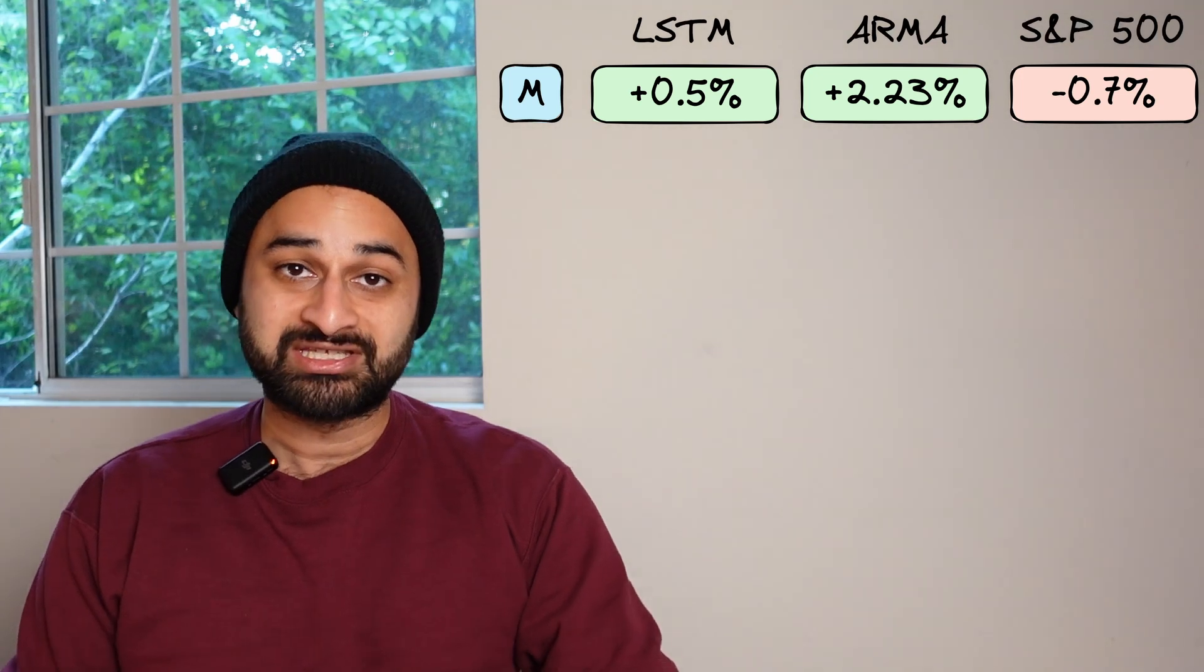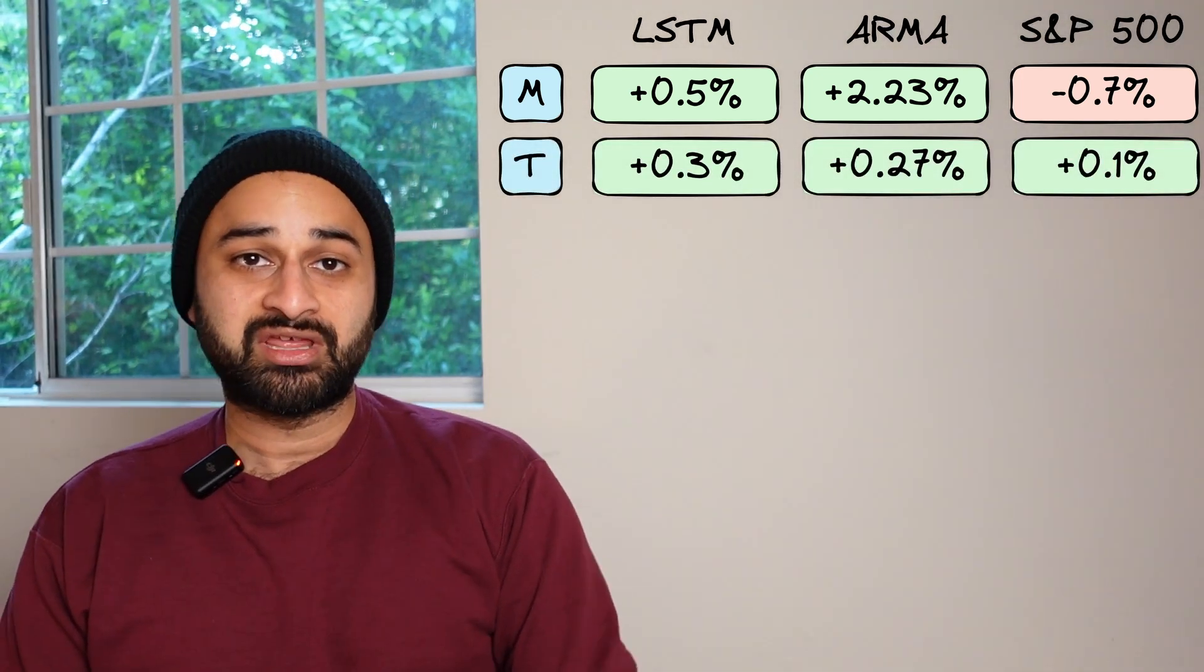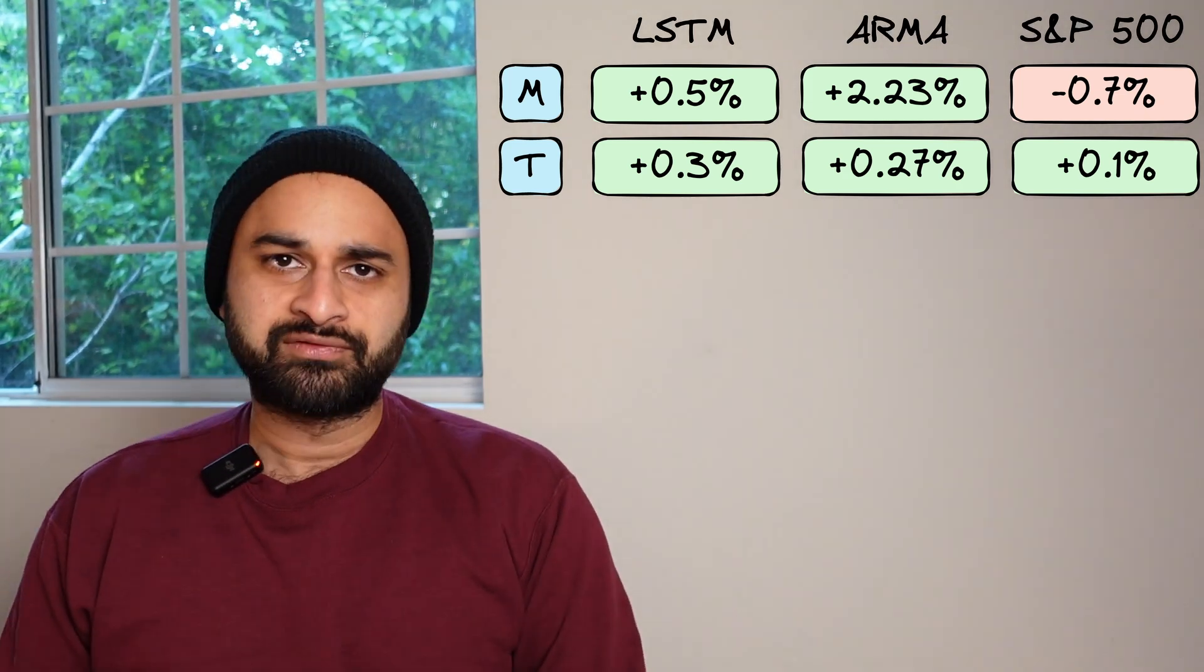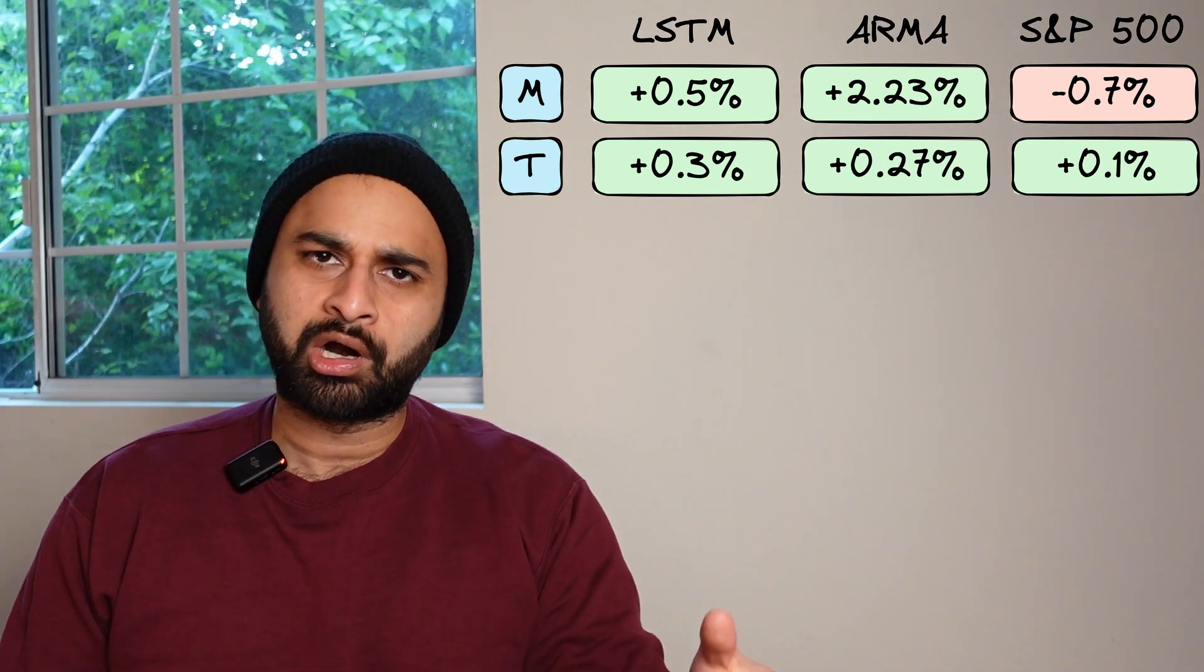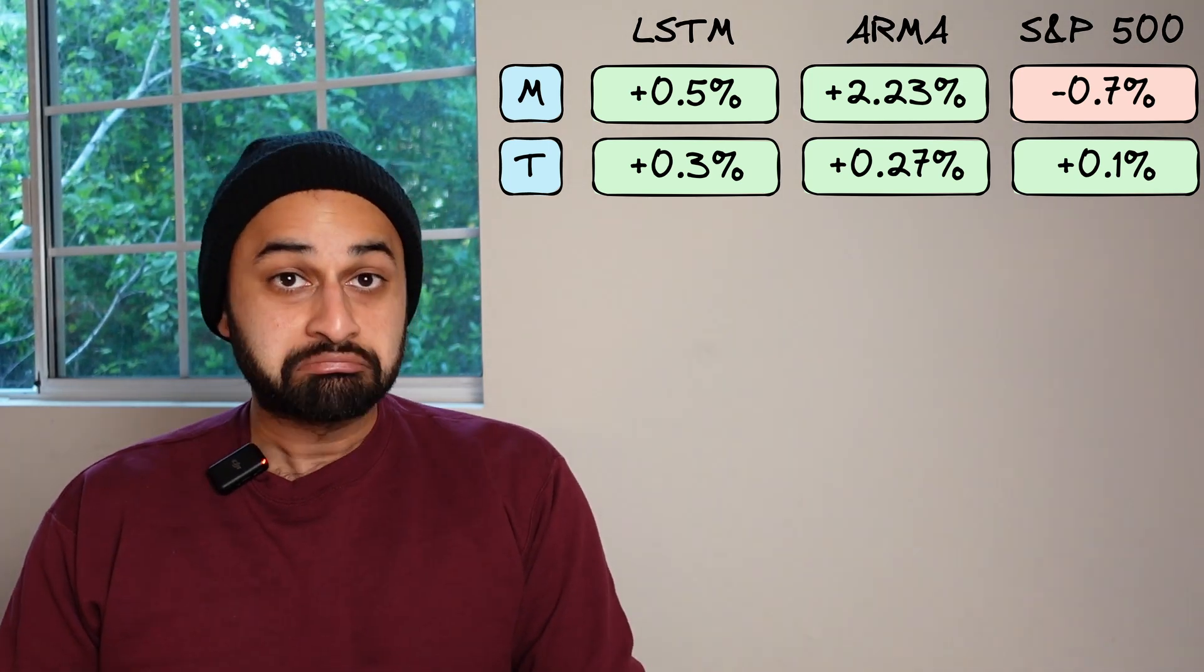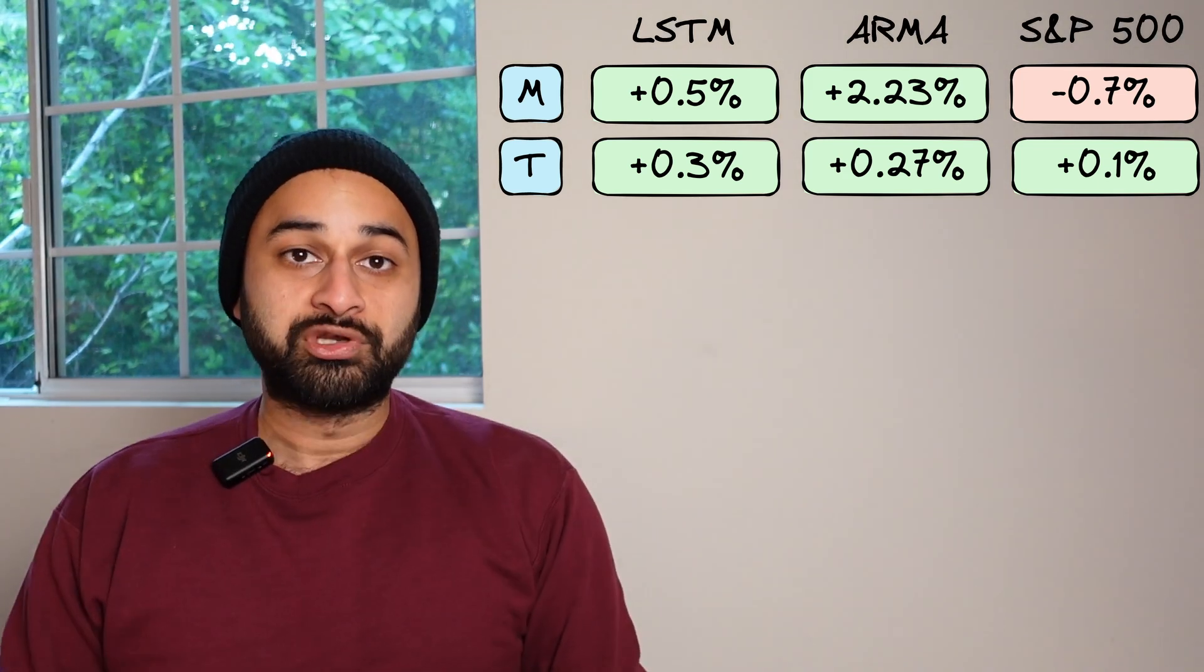Getting into Tuesday, we see that the LSTM and ARMA models do very similarly. The ARMA model gives you a 0.27% return and the LSTM model gives you just a little bit more at 0.3%. And again, good news: we see both of them are beating the market model today, which would have given us 0.1% return.